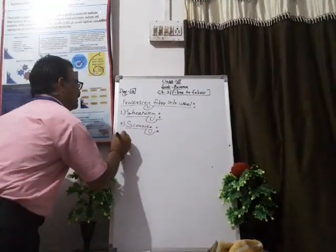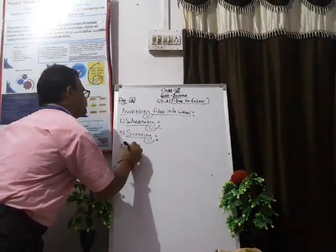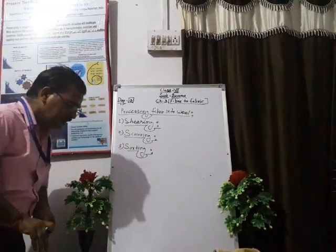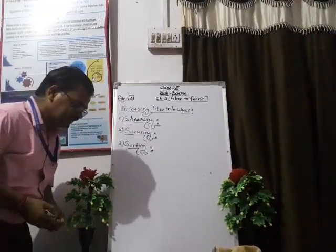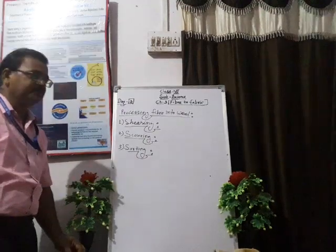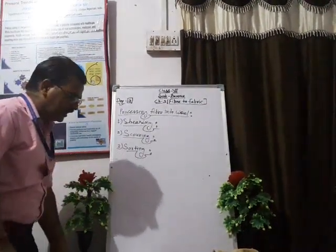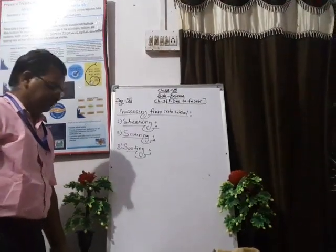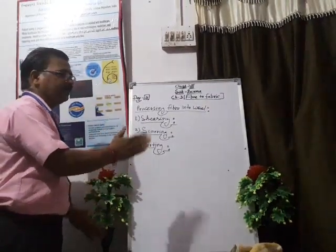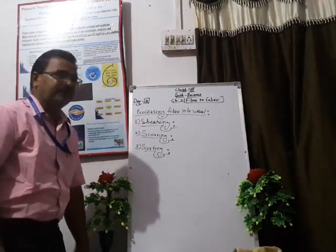The third step is sorting. In this process, the clean wool is sorted according to its texture. The wool is classified — different types of wool with different textures are separated. This classifying of portions is what we call sorting.